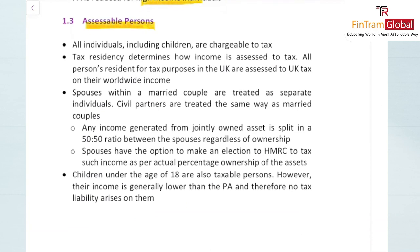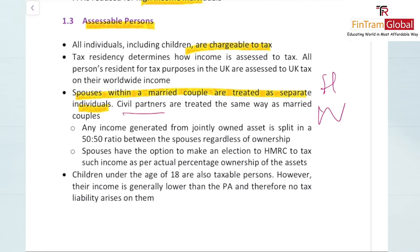All individuals in the UK, including children, are assessable or chargeable to tax. Tax residency determines whether they are taxed or not. All UK tax residents are assessed to tax on their global income — so if you are a UK tax resident earning income across the world, you will be taxed on all of that, with due regard to double taxation agreements. Spouses within a married couple are treated as separate individuals, as are civil partners.